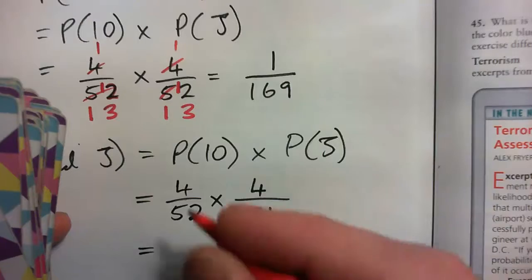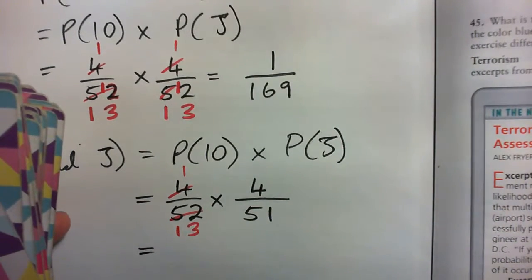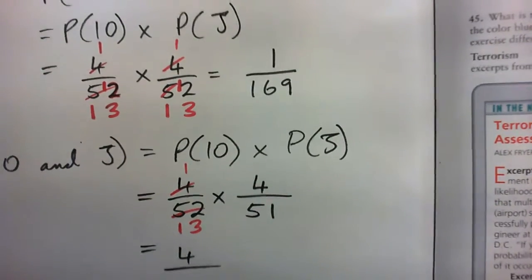And so, again, cross-cancel, that's 13. And we get 4 over 13 times 51.